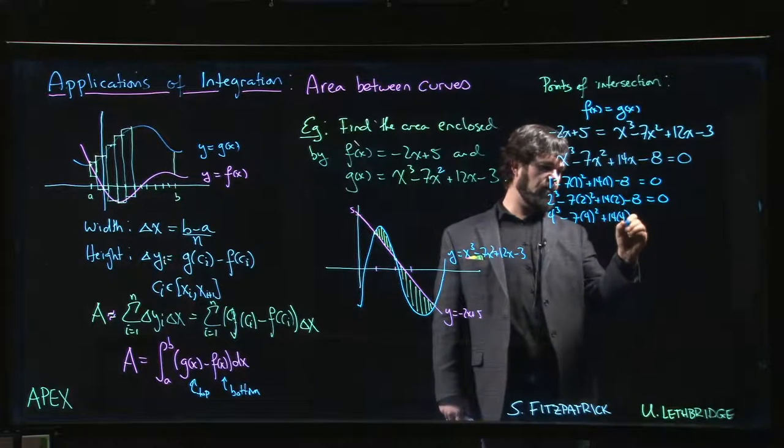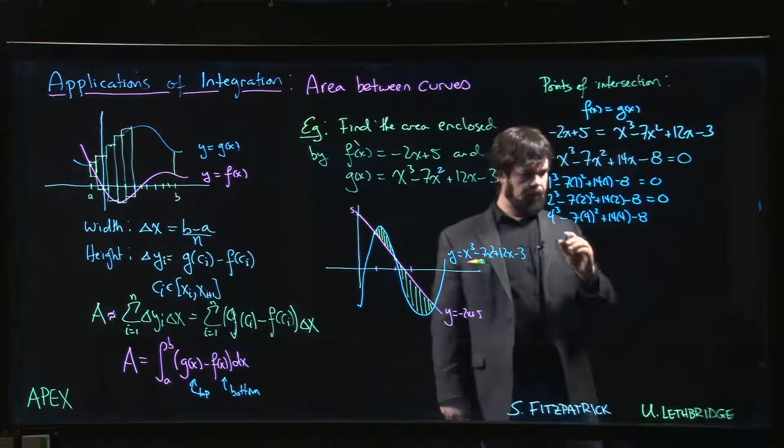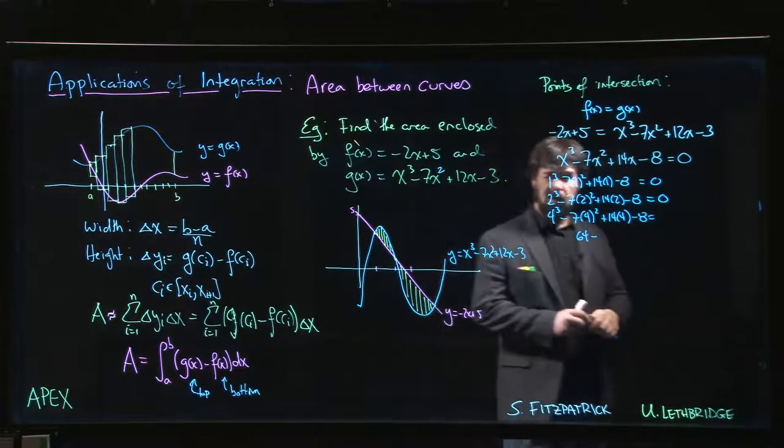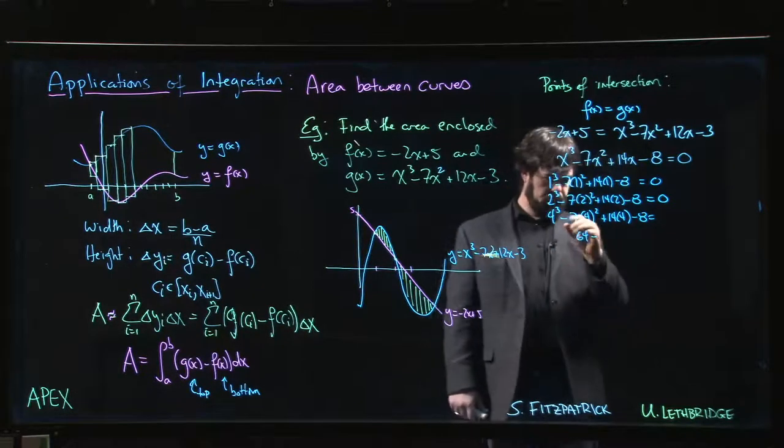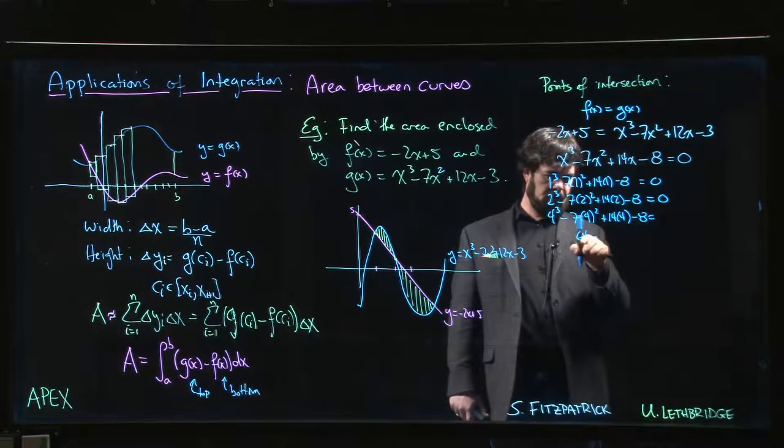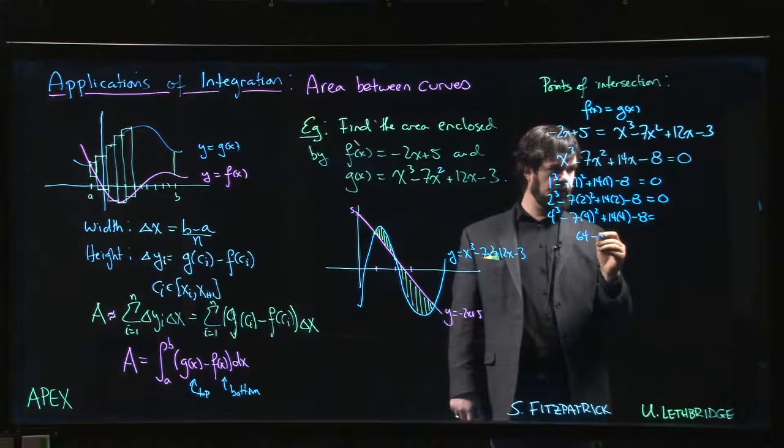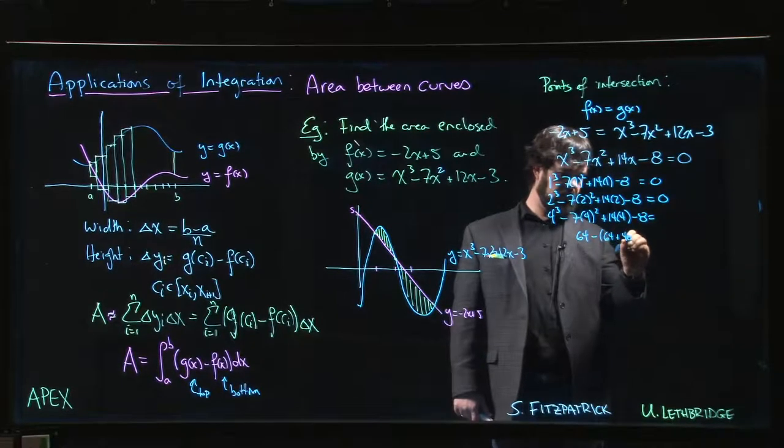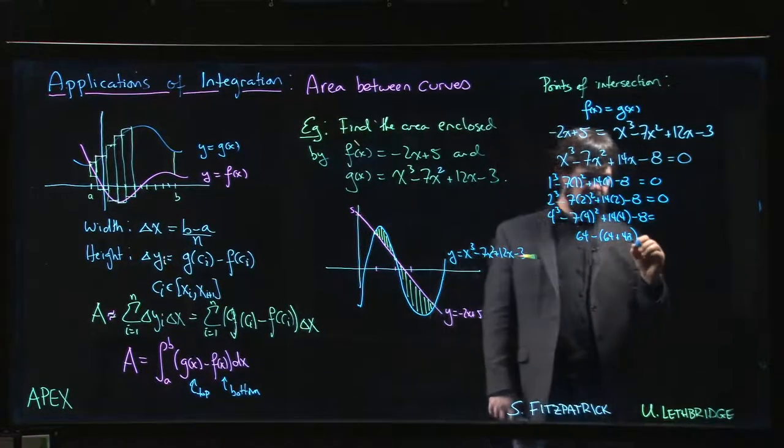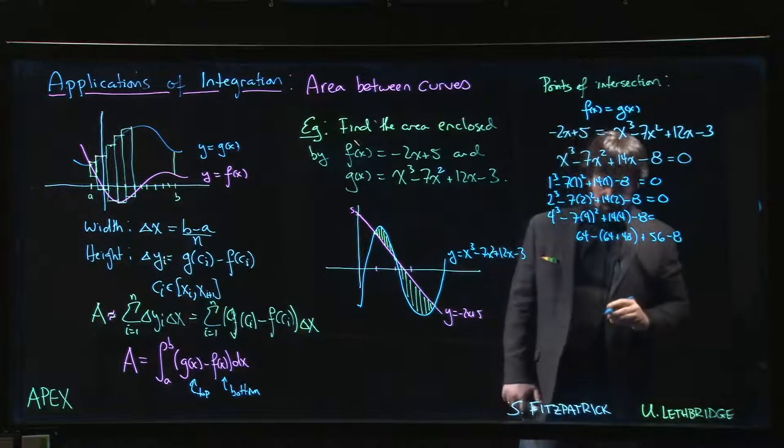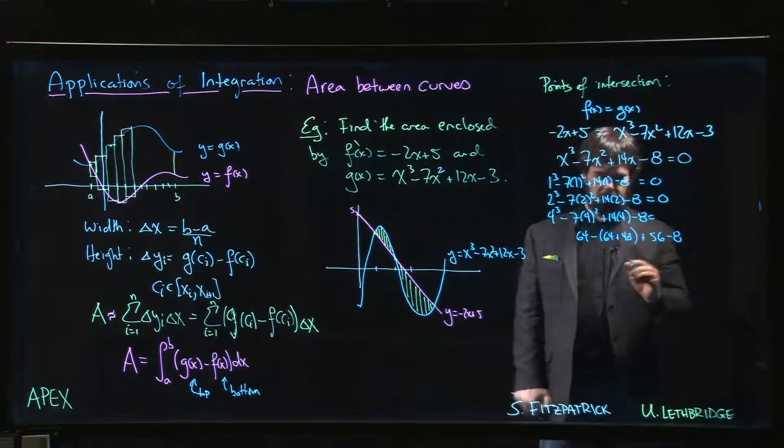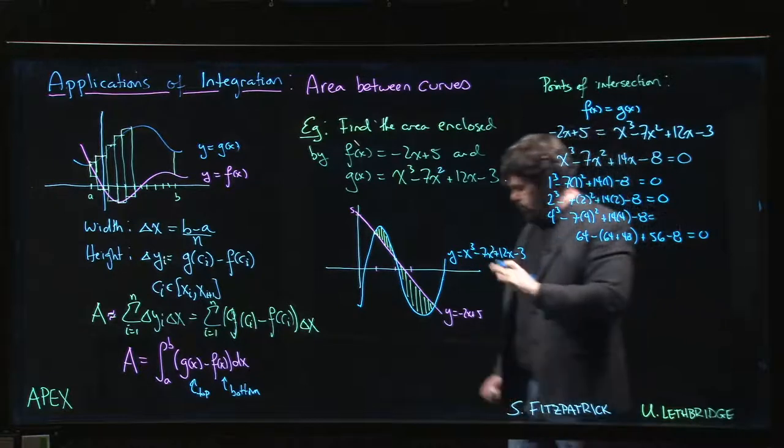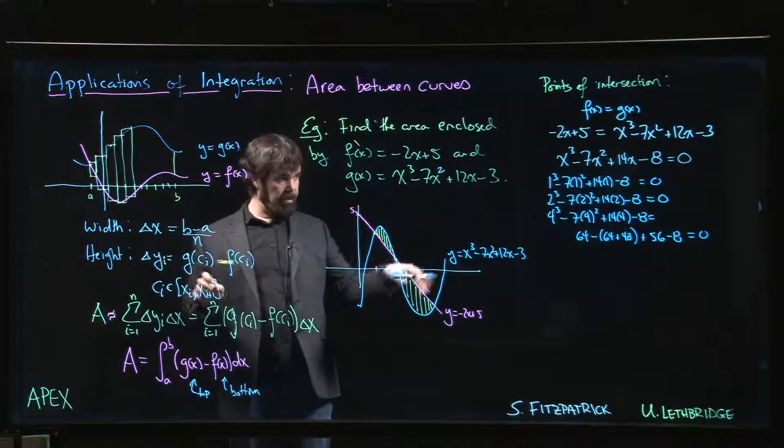4 works because 4³ - 7 times 4² + 14 times 4 - 8. That's 64, 7 times 16, so 64 plus 48, 14 times 4 is 56 minus 8. And let's check out that that works. Yeah, because the 64 is canceled, minus 48 minus 8 is minus 56 plus. Okay, so they all work out. We found our zeros.